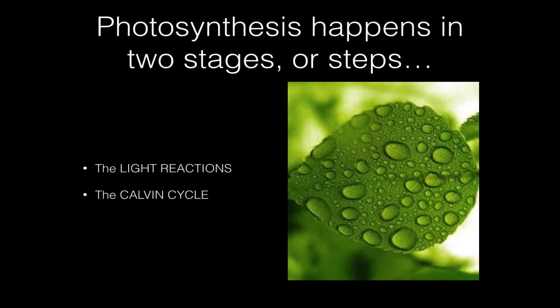Now photosynthesis happens in two stages or steps. This is actually a very complicated bit of chemistry, but we're just going to break it down into two major stages. The first stage is called the light reactions, and the second stage is called the Calvin cycle.